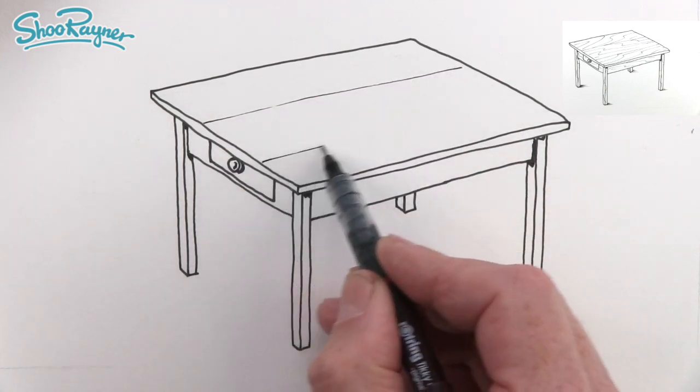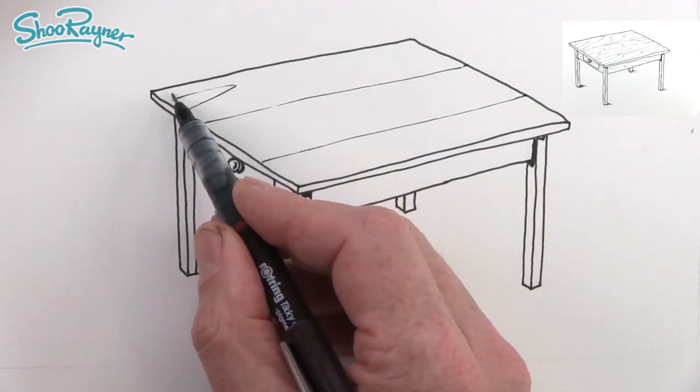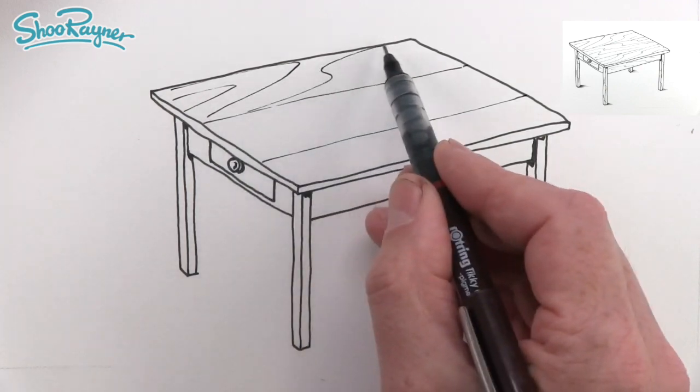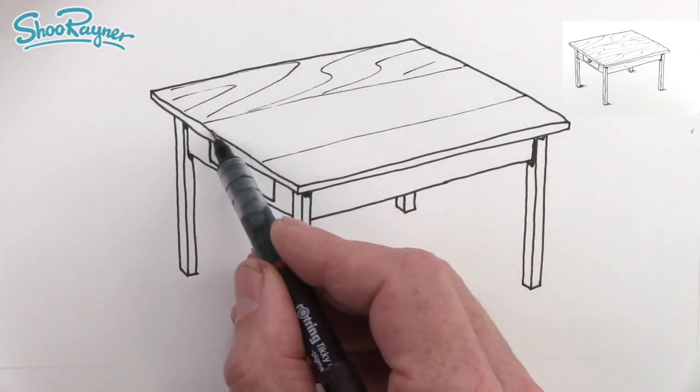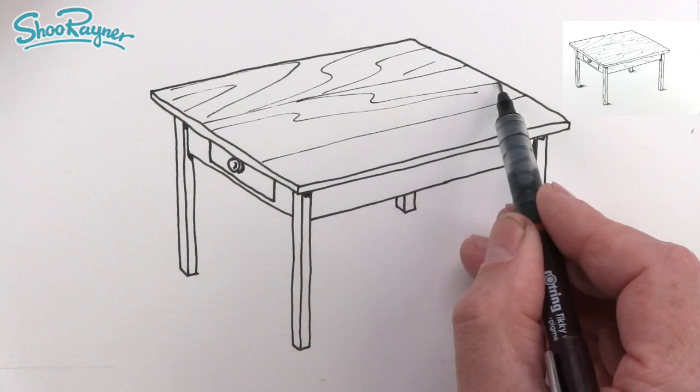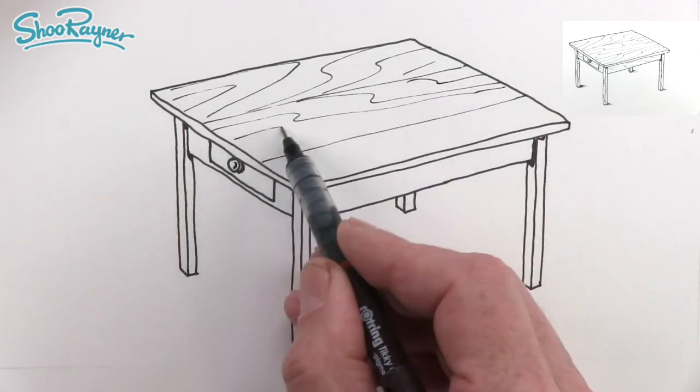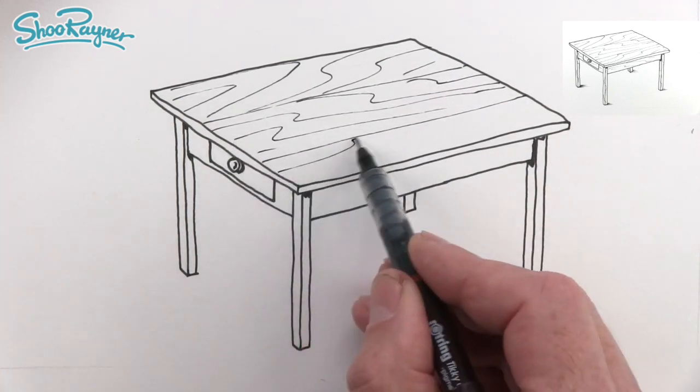And we can imagine this is made of maybe three large wide boards and we can draw these kind of rambling river shapes for the wood effect on the top.